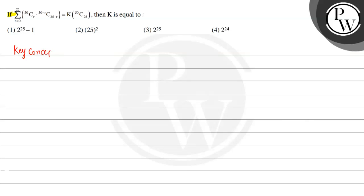The key concept to solve this question is: we know the value of nCr is n factorial divided by r factorial multiplied by (n minus r) factorial. Also, summation of nCr where r is from 0 to n is equal to 2 to the power n.